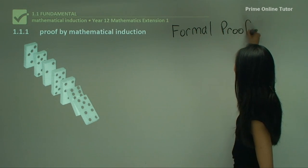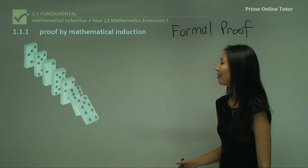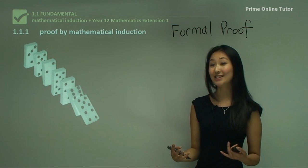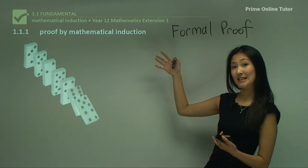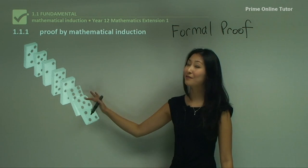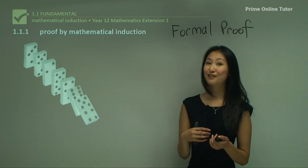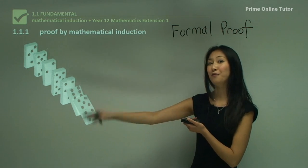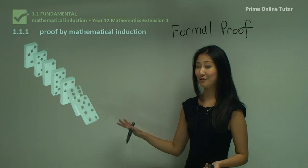You're probably all wondering why I have a picture of dominoes up on the board. That's because dominoes is actually an excellent analogy for what mathematical induction is. So if mathematical induction is a formal proof, then we're going to be proving that these dominoes will all fall over. That's the proof I want to have for the dominoes — and I'm going to use a process of mathematical induction to prove that.